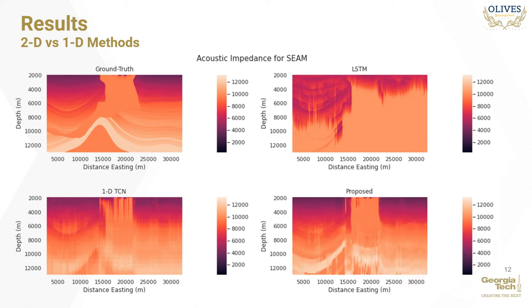Our proposed 2D CNN approach produces an estimated acoustic impedance profile that is sharper throughout the region. This can be observed at the sides of the salt, the left and top of the high impedance arch at the bottom, and the transition boundary between low and high impedance regions in the top right of the model. The model is even able to capture the tiny grooves at the top of the salt as indicated by the arrows. These observations lead us to conclude that the proposed approach estimates acoustic impedance rock profiles better than the 1D sequence modeling methods based on LSTMs and CNNs.